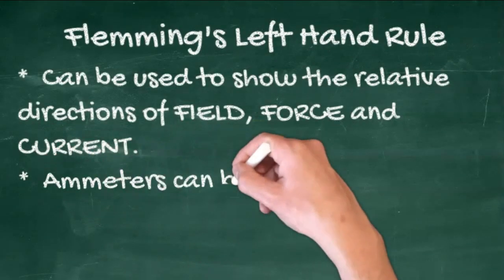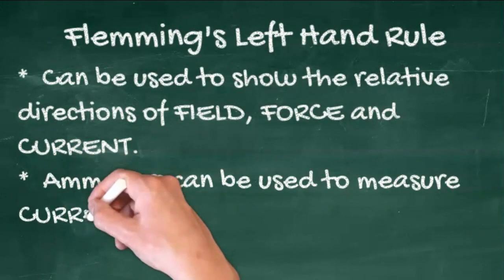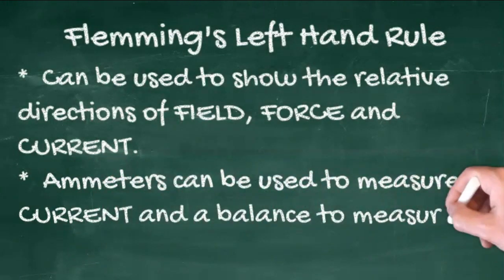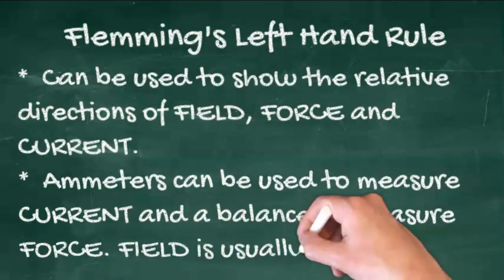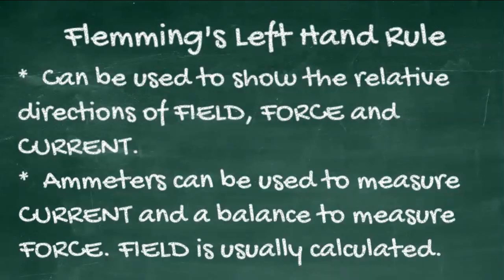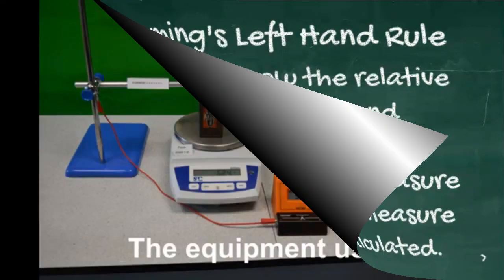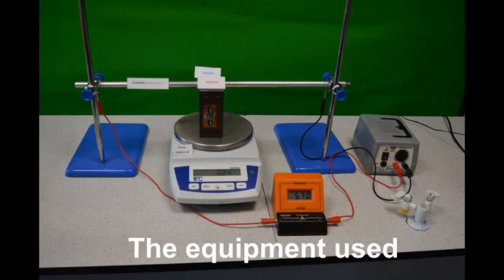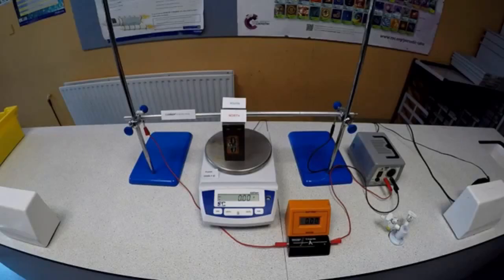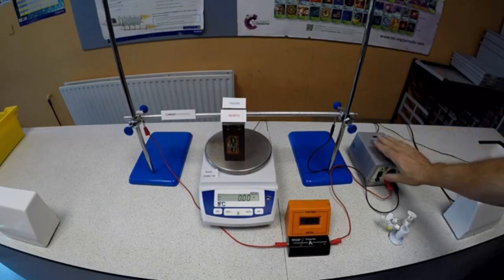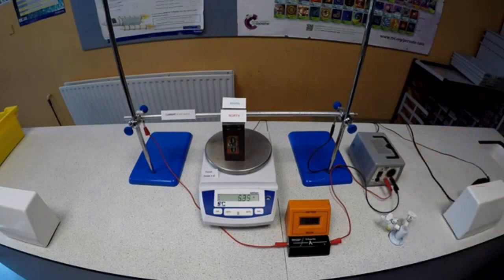An ammeter can be used to measure the current flowing, and a balance to measure the change in force. It's usually the field that's calculated. This experiment is an example of how you might calculate the field. Don't forget that weight is a force. In the picture, conventional current flows through the magnetic field, along the aluminum rod, from left to right.